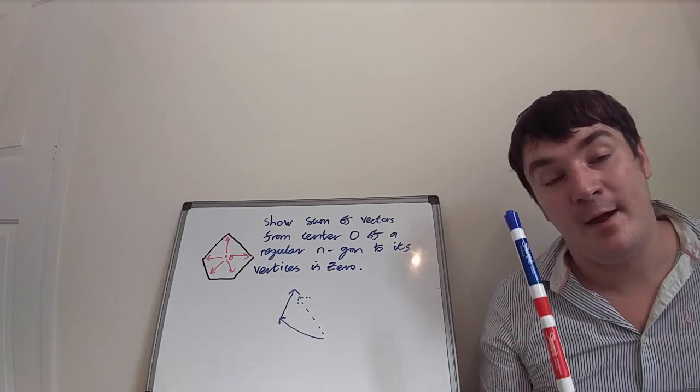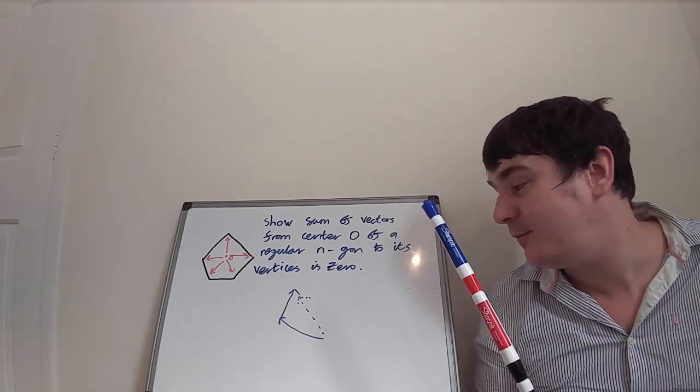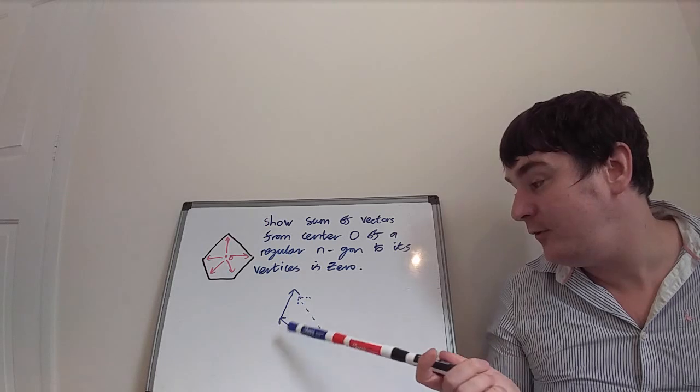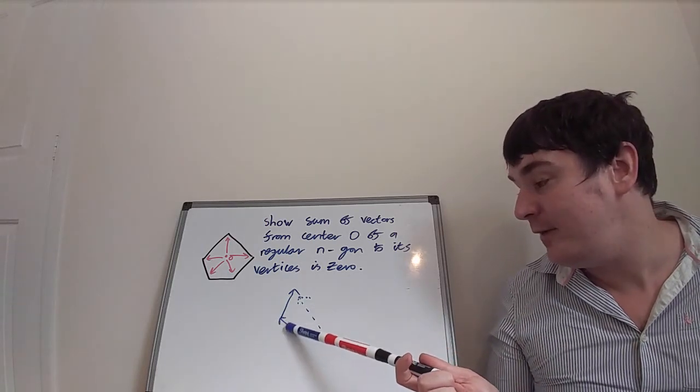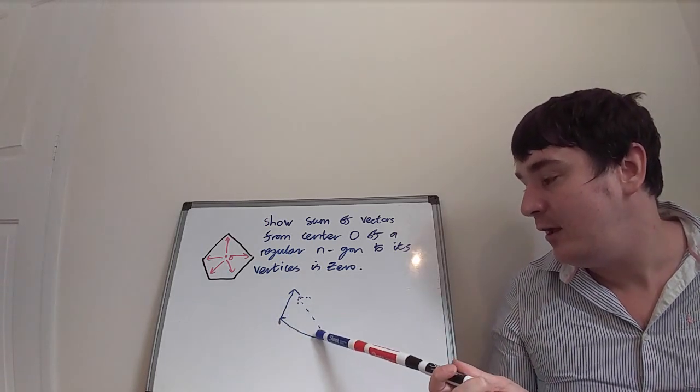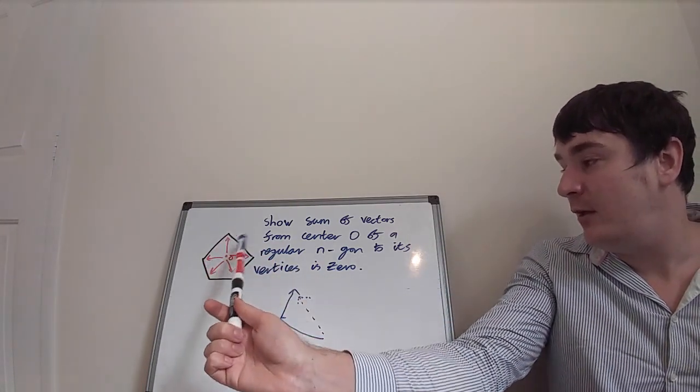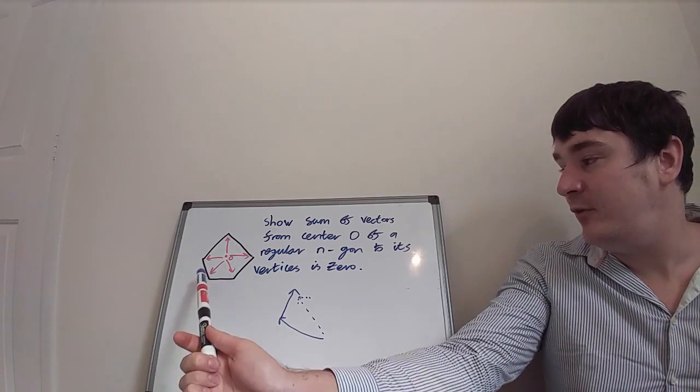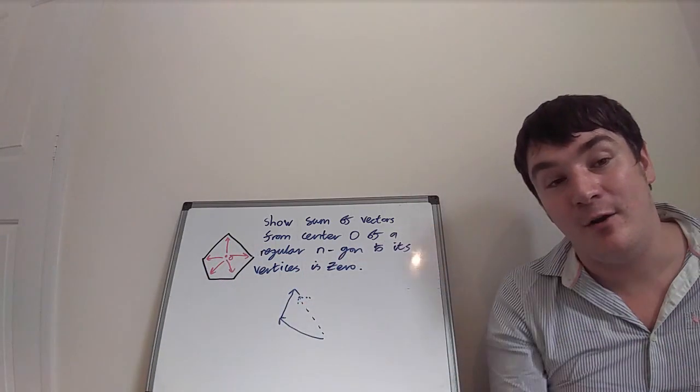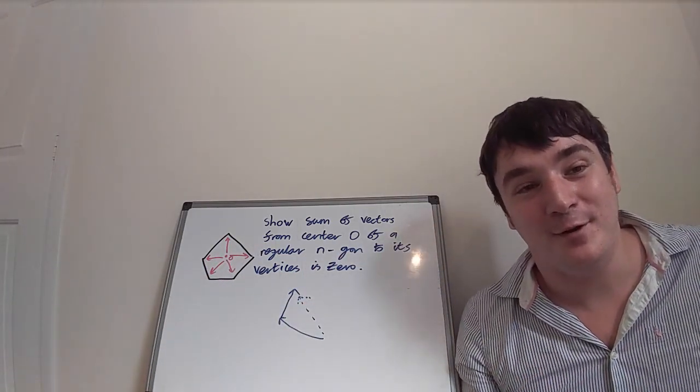Can you think of a nice short way to demonstrate that? The way we add vectors is as shown here. This vector plus this vector is this dotted line vector here. We want to show that the sum of all these vectors from the center to the corners of a regular n-gon is zero. Good luck with that.